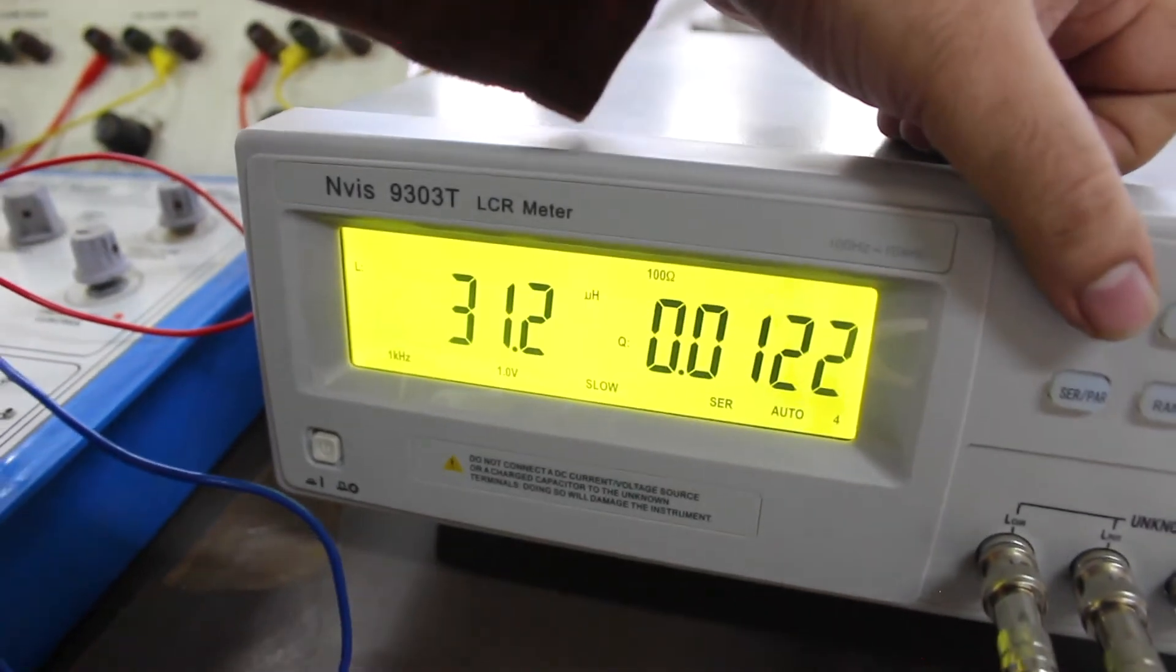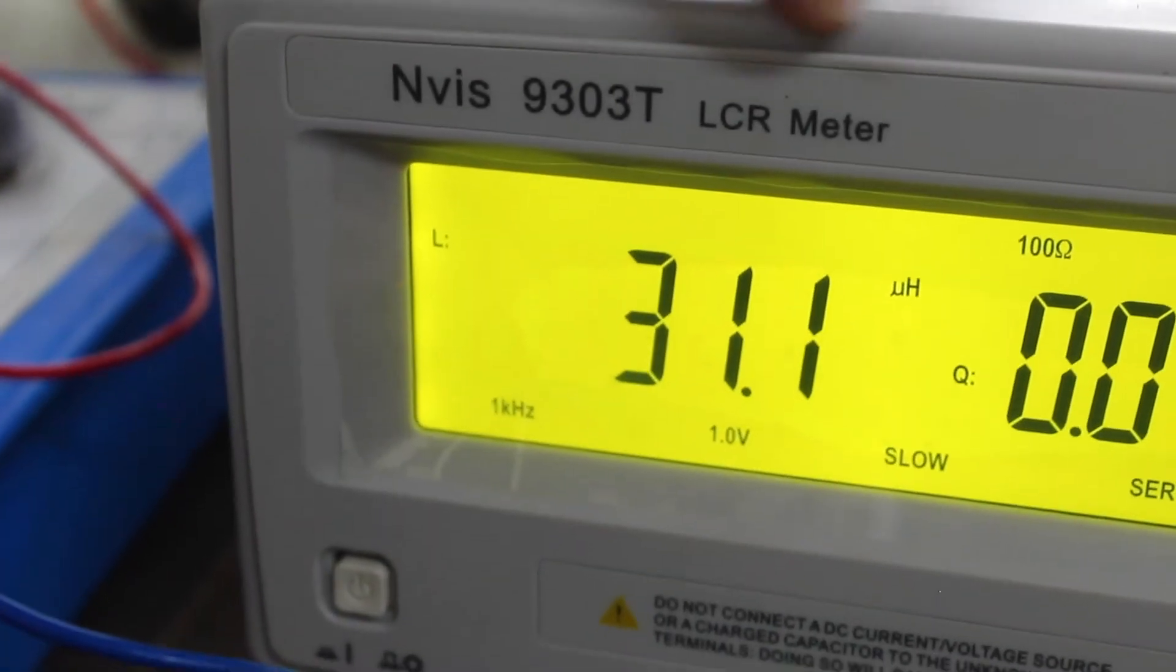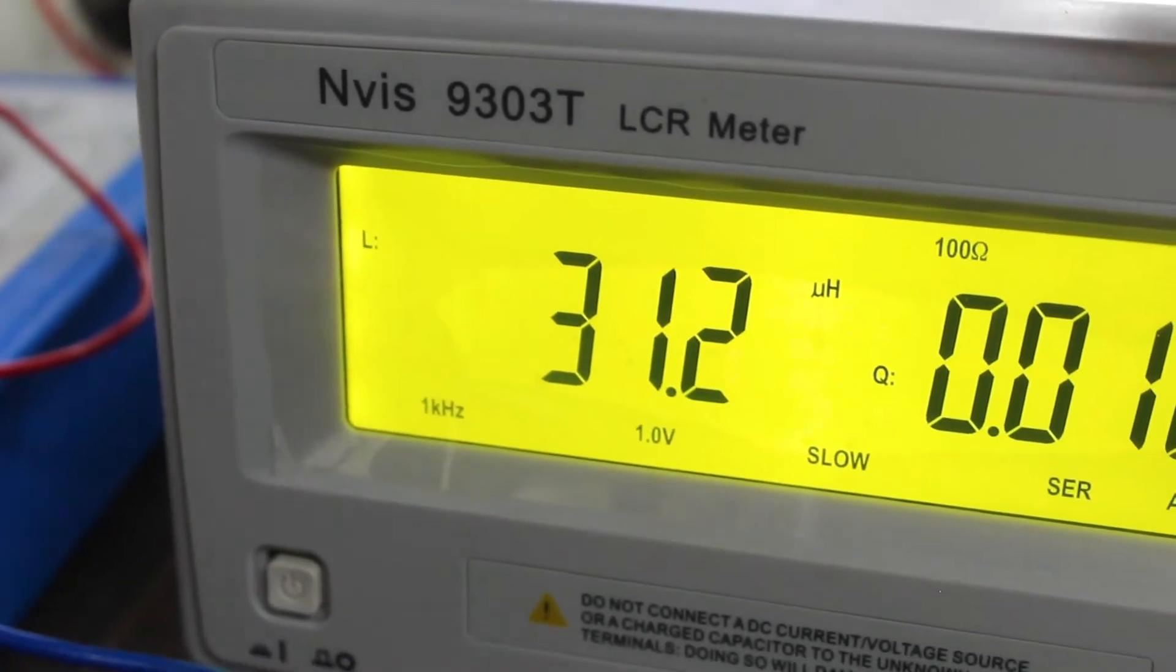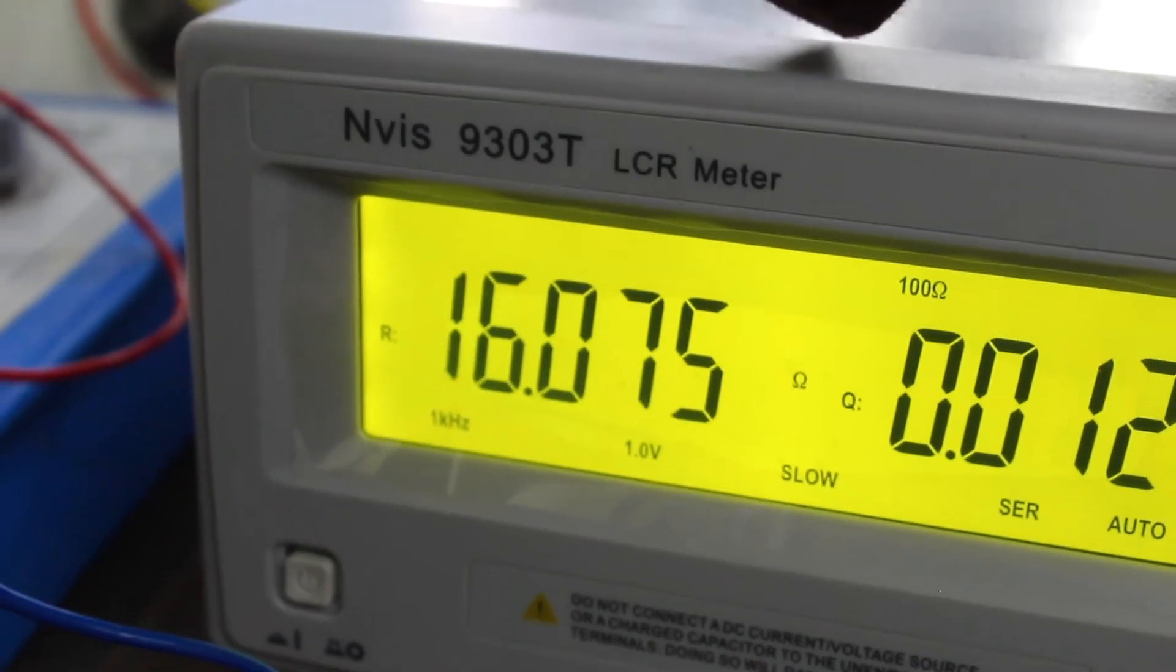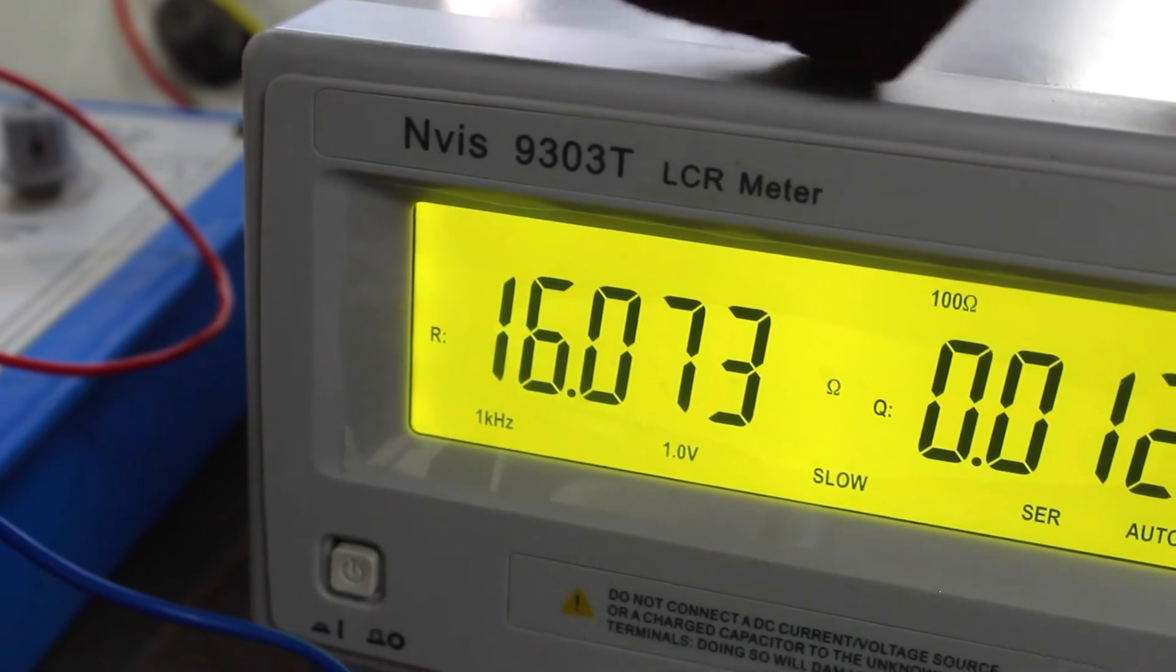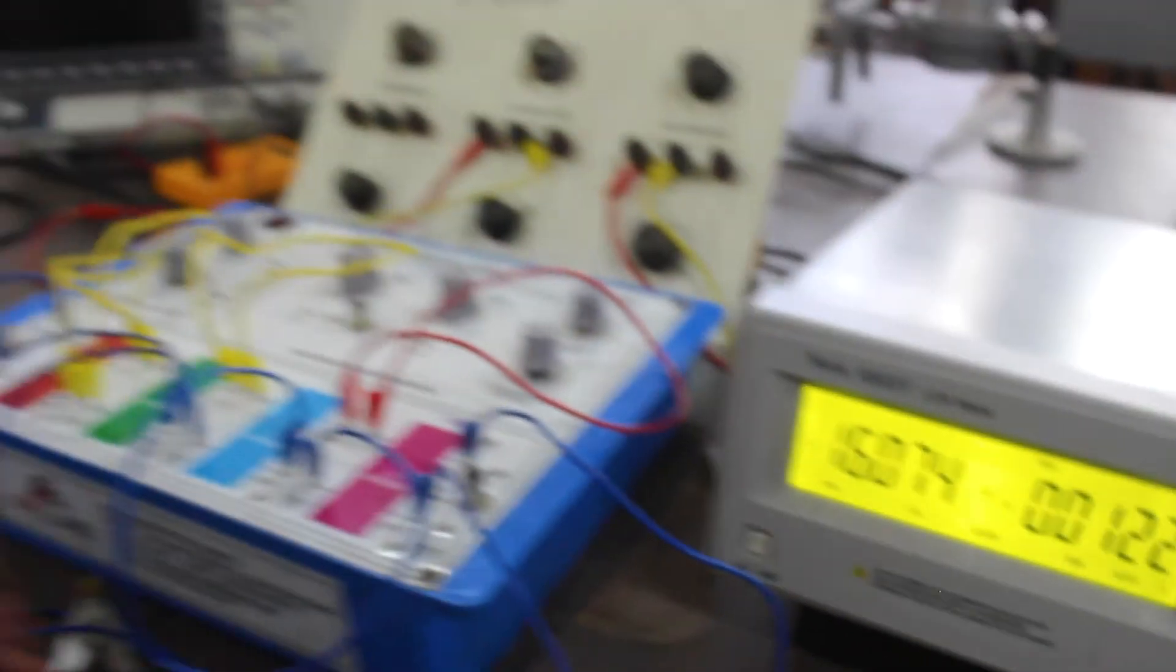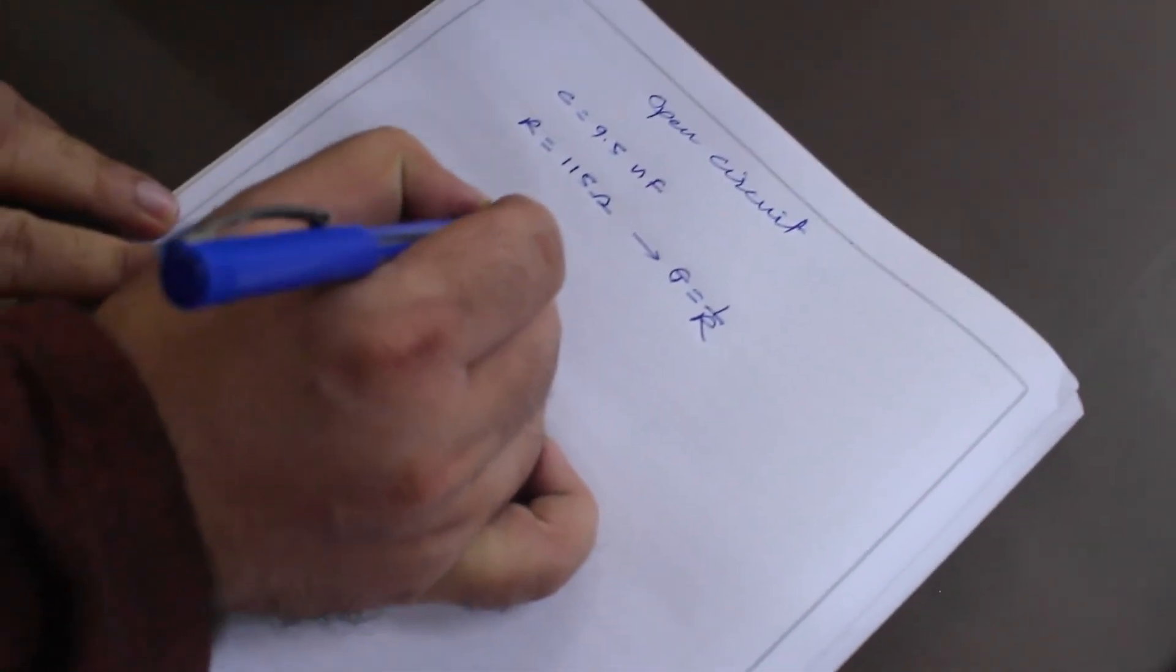On the LCR meter you can see the readings. Now we have to take the reading in the short circuit case, the inductance value. So you can see 31.2 microhenry is coming - the L value. And R value around 16 ohm is coming. So I will note these values. Again, you can see the L value in short circuit case.